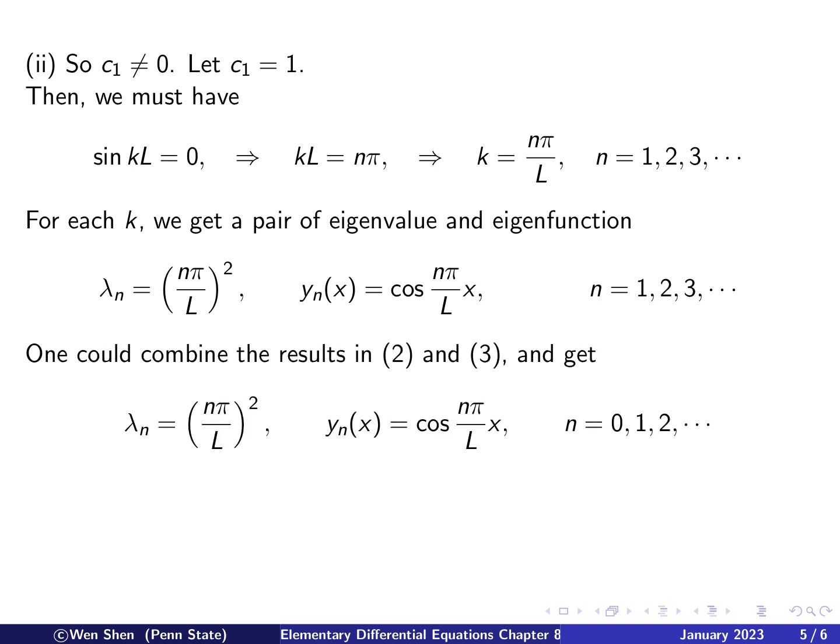Okay, so we can combine the results in the case 2 and 3, and we can include the case where the constant is a solution by noting that if n shall be 0, cosine of 0 is just 1. So we can say this will be all the eigenvalue and eigenfunctions, and we let n go from 0, 1, 2, where the 0 is the one we get in case 2, where lambda equals 0.